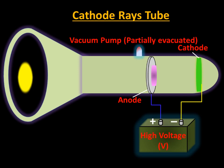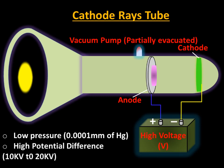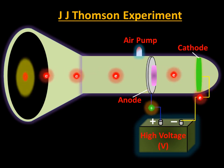The other end of the glass tube is coated with a phosphorous material and used as a fluorescent screen, which is used to detect particles emitted from the cathode. The pressure inside the glass tube is 0.001 mm of mercury, and a high potential difference of 10 kV to 20 kV is supplied across the electrodes. By applying this high voltage, particles are emitted from the cathode, move toward the anode, and proceed until they strike the fluorescent screen.